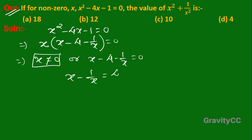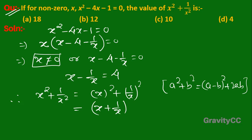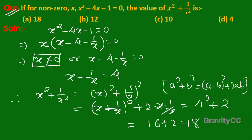So x - 1/x = 4. Therefore x² + 1/x² equals (x - 1/x)² + 2·x·(1/x), using the identity a² + b² = (a - b)² + 2ab. Substituting: (x - 1/x)² + 2 = 4² + 2 = 16 + 2 = 18.